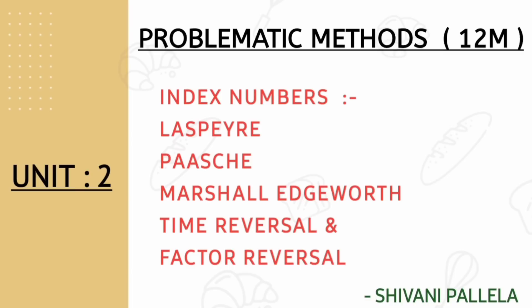In unit number two, Index Numbers, the main formulas are: Laspeyres formula, Paasche's formula, Marshall-Edgeworth, Time Reversal, and Factor Reversal. These are the five main formulas in unit two. This is the definite problematic question they will ask for 12 marks.